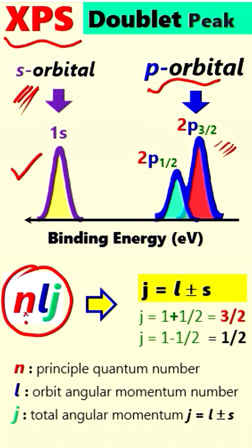This n represents the principal quantum number, this l represents the orbital quantum number, and this j represents the total momentum, which is the combination of orbital and spin angular momentum. This s is not talking about the orbital - this is the spin quantum number, which is equal to plus or minus one-half.